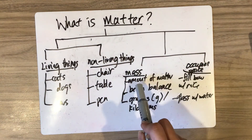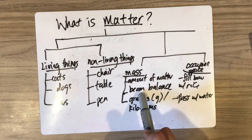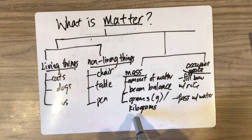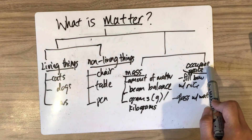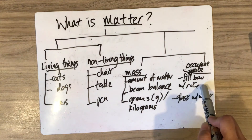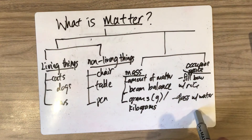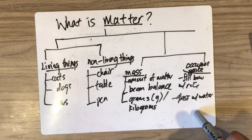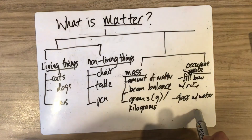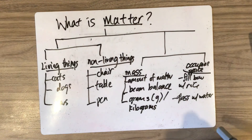Mass is the amount of matter. You use a beam balance to measure it, and it is measured in grams and kilograms. It occupies space — for example, you fill a bowl with rice, or you fill a glass with water. We also know that air is a matter; although we cannot see air, it has mass and occupies space.